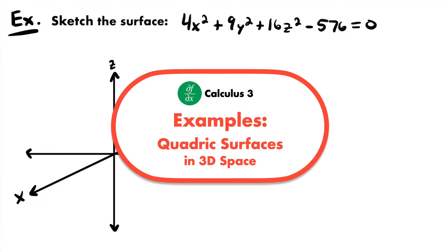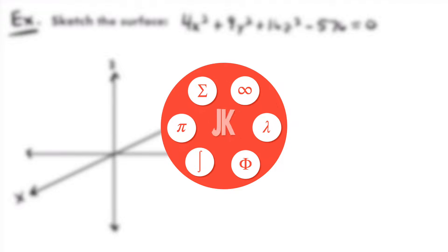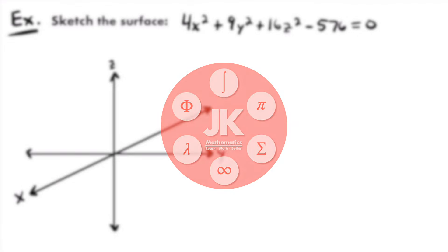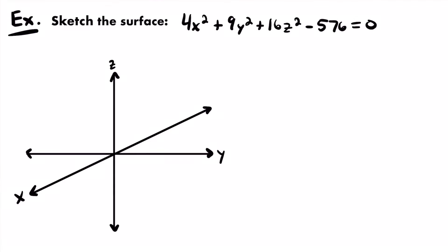Welcome back. Let's practice sketching quadric surfaces in 3D space. Here's our first example. We want to sketch the surface represented by this equation: 4x² + 9y² + 16z² - 576 = 0.